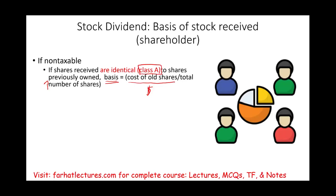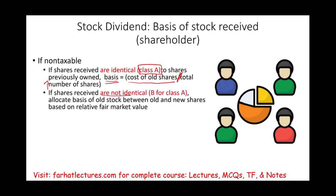You take the old amount of money initially invested and spread it over the total new number of shares. If the shares received are not identical — for example, you have Class A and they gave you Class B — you must allocate the basis of the old stock between the old and new shares based on relative fair market value, since you paid nothing for the new stock.